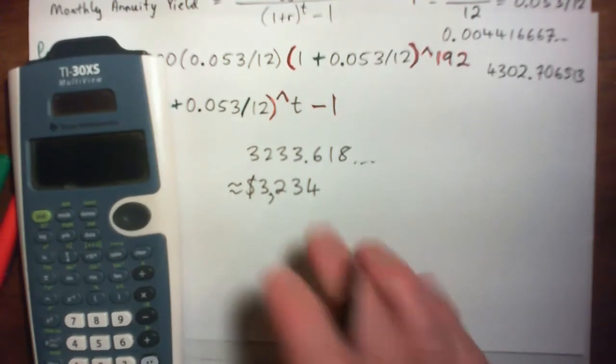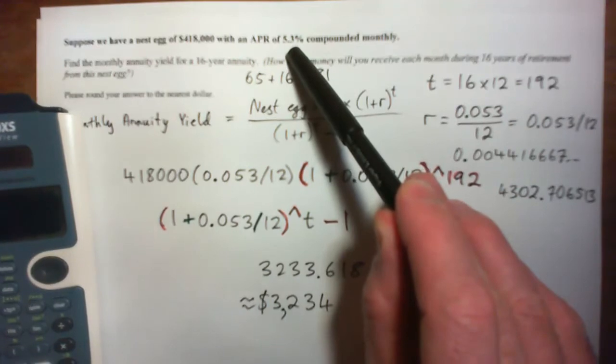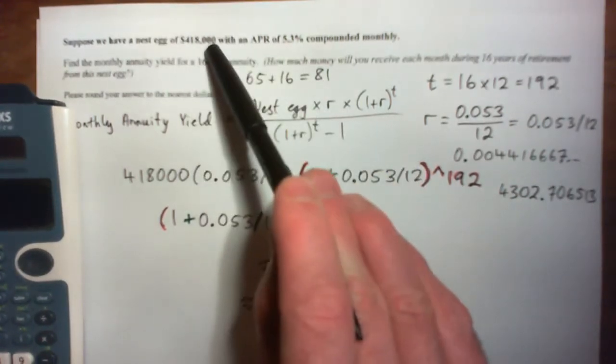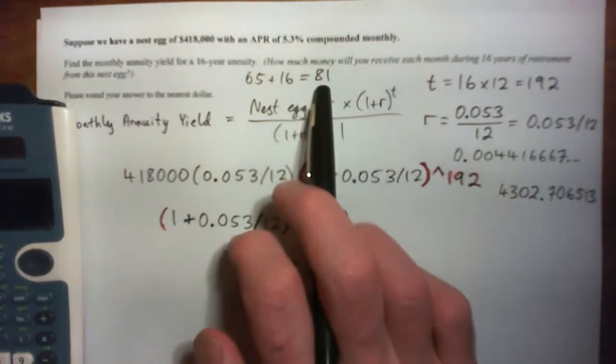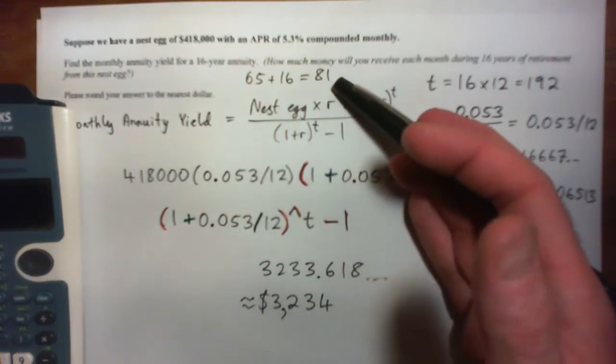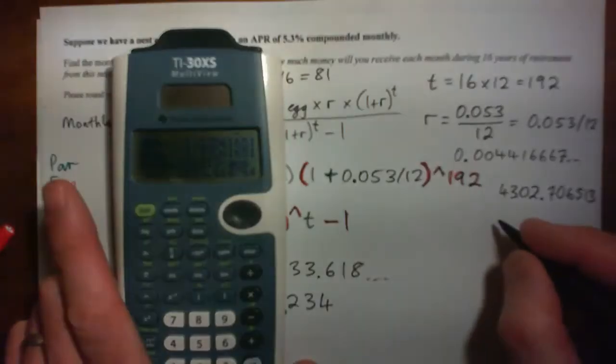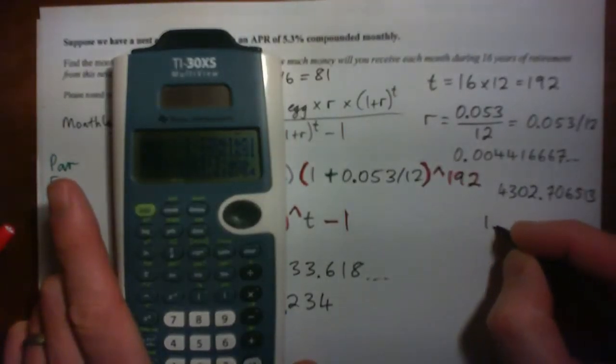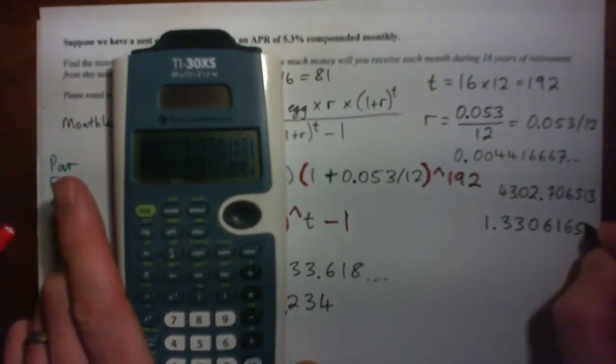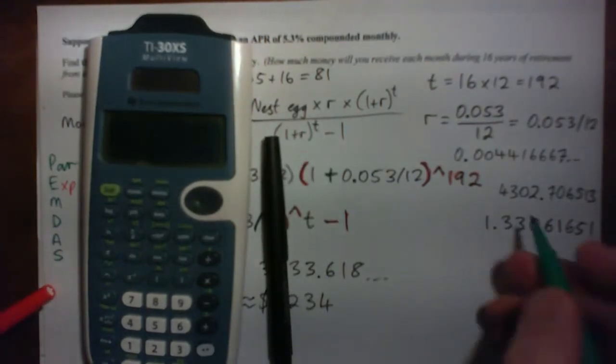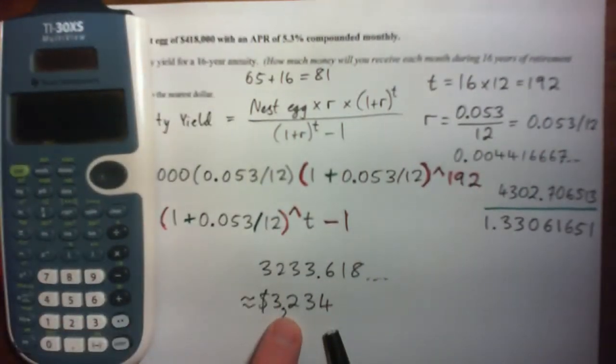So the answer is, if this is the fixed interest rate for 16 years while you're retired, and you've saved up this amount of money, then it will pay out this each month. And then by age 81, it'll be all gone. So I'm just going to write out these numbers in case you didn't catch them. But the bottom of the fraction is 1.33061651. So you could obviously type this out and divide by that. So you should get this on the top, this on the bottom, to get this and round it to this.